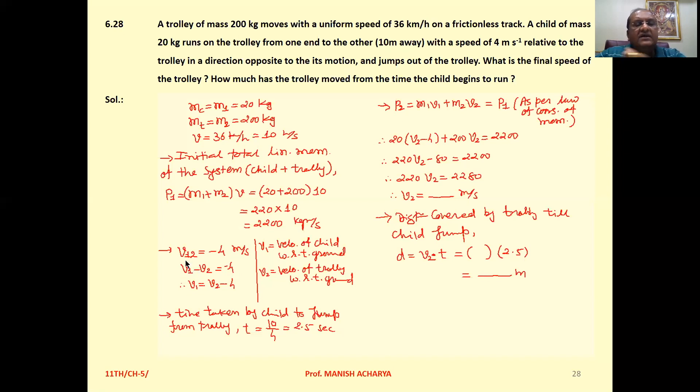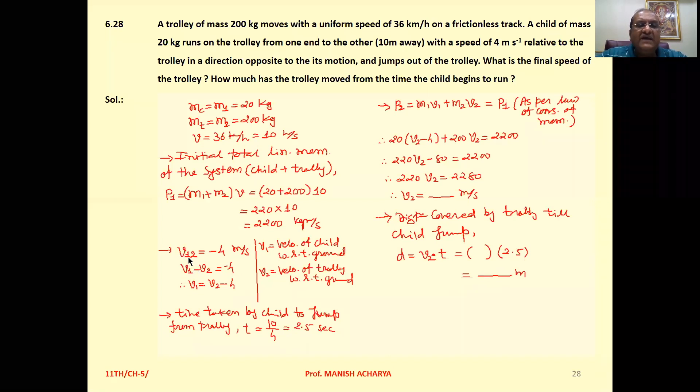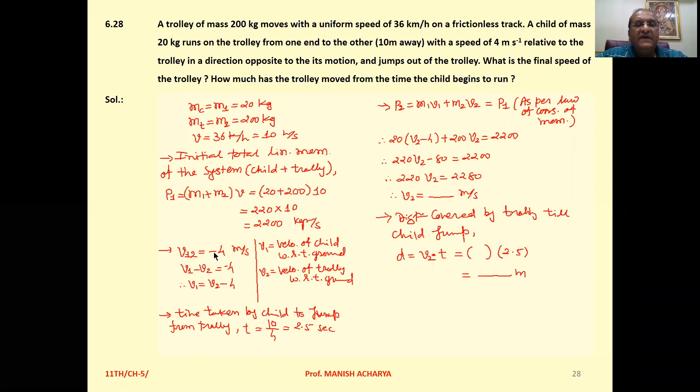We can write the velocity of the child, V1 with respect to 2, as -4 m/s because it is moving in the opposite direction of motion of the trolley.